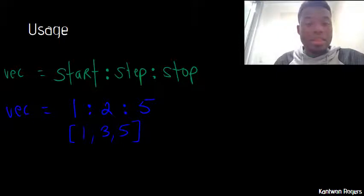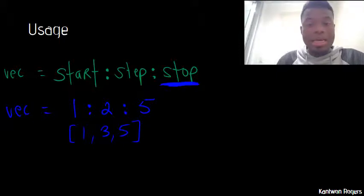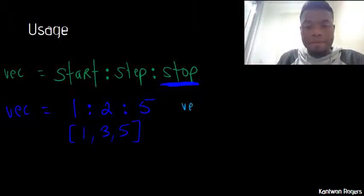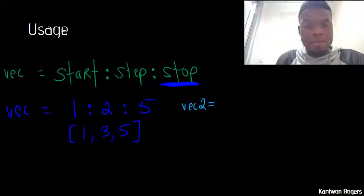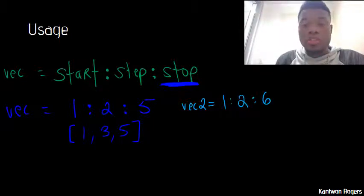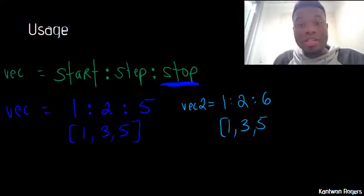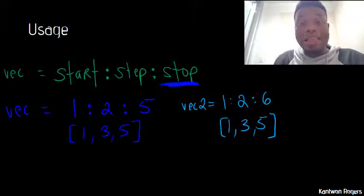And so it must be said that this stopping number here, it's not guaranteed to be inside of your vector. So what I mean by that is, let's say I had vec two is equal to one colon two colon six. So the same type of thing happens here. So we start at one, we add two, we get three, we add two, we get five. And if I were to add two to five, I would get seven and seven is past my stopping number. So therefore MATLAB just stops there. And that will be the vector that's produced. So those two lines of code produce the same exact vector because that stopping number is not inclusive.